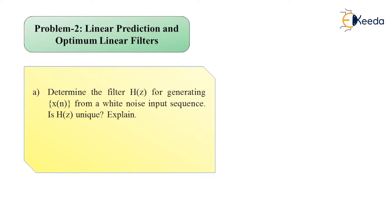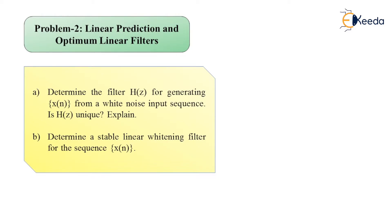We are finding solutions for Part A and Part B. In Part A, we are asked to determine the filter H(Z) for generating X(n) from a white noise input sequence, and to explain whether H(Z) is unique. In Part B, we are asked to determine a stable linear whitening filter for the sequence X(n). The current problem involves an ARMA (autoregressive moving average) discrete-time random process.